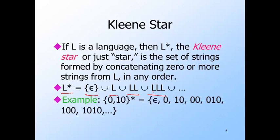Here's an example. Language L has just two strings: '0' and '10'. The star of that language: taking no choices gives the empty string; taking one string gives '0' or '10'. Taking two choices: both '0' gives '00'; '0' then '10' gives '010'; '10' then '0' gives '100'; and both '10' gives '1010'. And so on for more choices.